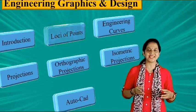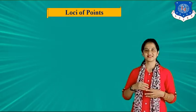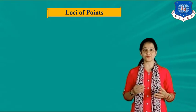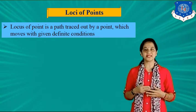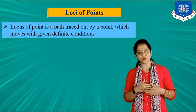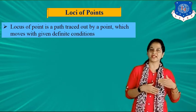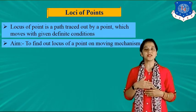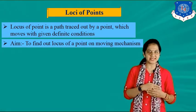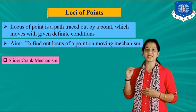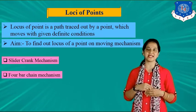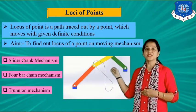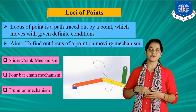Next topic is loci of points. It is also known as locus of point. Locus of point is a path traced out by a point which moves with given definite conditions. The aim is to find out locus of a point on moving mechanisms like slider crank mechanism, four bar chain mechanism, trunnion mechanism. Here, you can see the example of four bar chain mechanism.